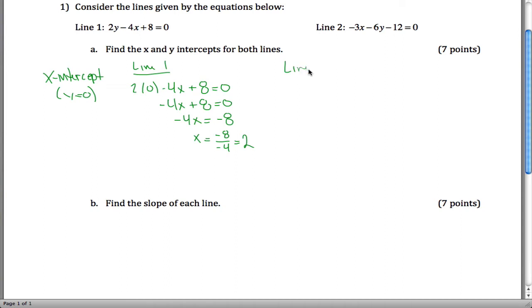For Line 2, if y equals 0, I have negative 3x minus 6 times 0 minus 12 equals 0. So that's negative 3x minus 12 equals 0. Negative 3x equals 12. If you divide both sides by negative 3, you get 12 divided by negative 3, which is negative 4.